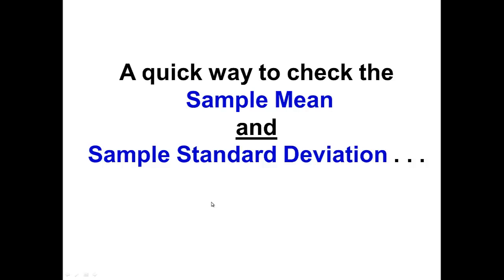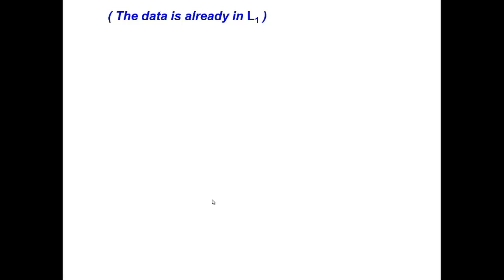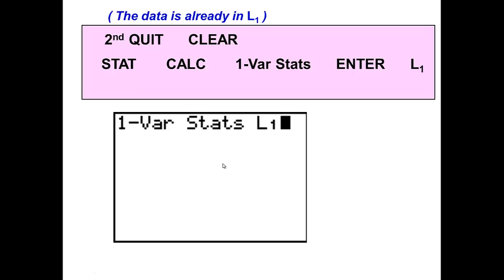Now we also have a very quick way to check the sample mean and the sample standard deviation. Notice this does not check the variance. But if you get your sample standard deviation correct, you should have your variance. Your data should already be in list one. You do have to complete that step. Then you press second, quit, and clear to clear everything off.